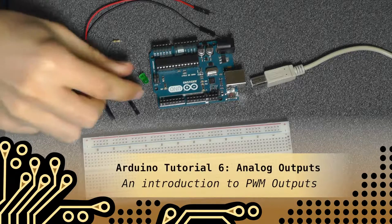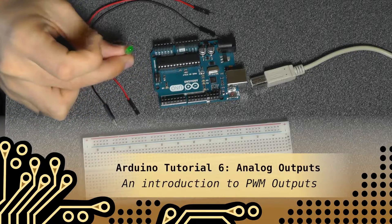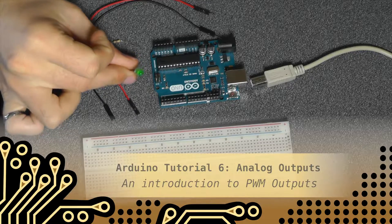In this tutorial I'm going to show you how to dim an LED using the analog write function of an Arduino Uno.